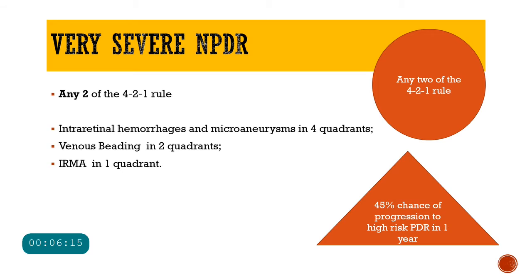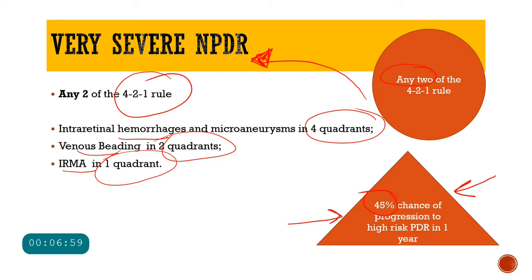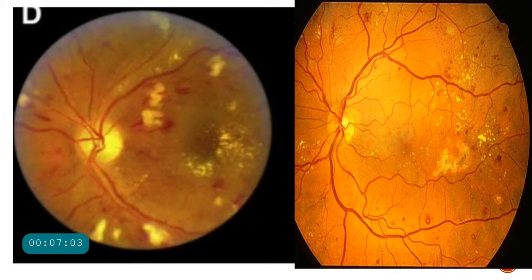Very severe NPDR is defined when any two of the 4-2-1 criteria are present simultaneously — for example, intraretinal hemorrhages in four quadrants and venous beading in two quadrants, or venous beading and IRMAs together. In very severe NPDR, the chance of progression to high-risk PDR increases to about 45%. Just look at these fundus pictures showing multiple hemorrhages in almost all four quadrants.